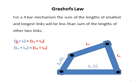So the length of the smallest link is S and the length of the longest link is L. When summed, they will be less than the sum of the remaining two links L3 plus L4. You can also write this as: capital S represents length L2 and capital L represents L1.